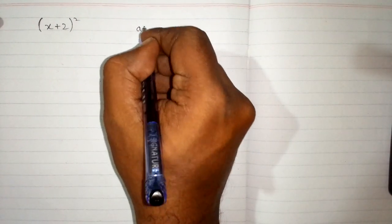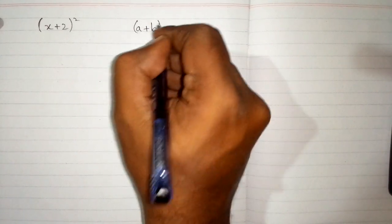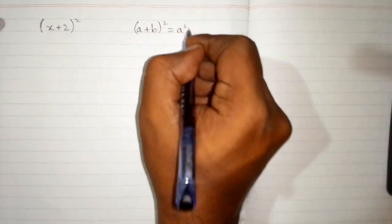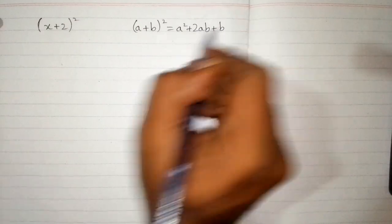In this video, we will expand an expression x plus 2 whole square by using an algebraic identity which is a plus b whole square equals a square plus 2ab plus b square.